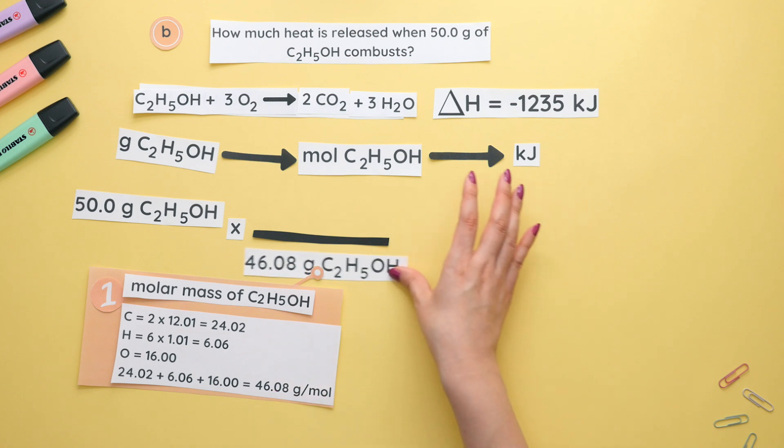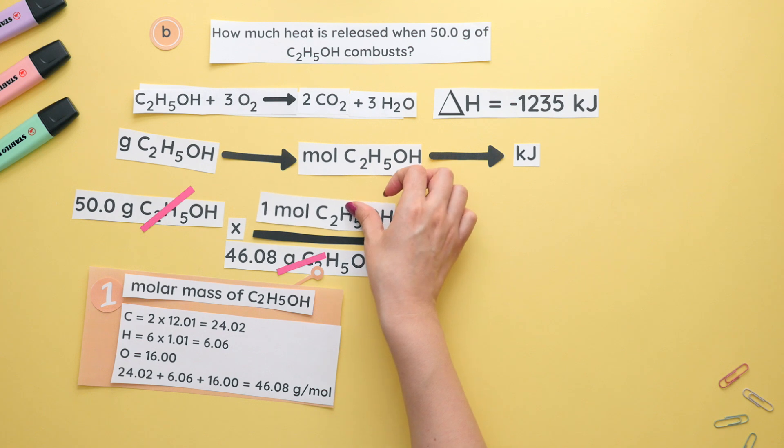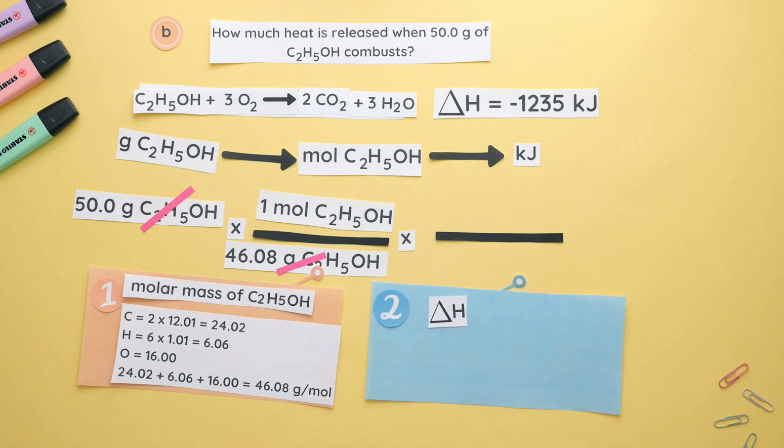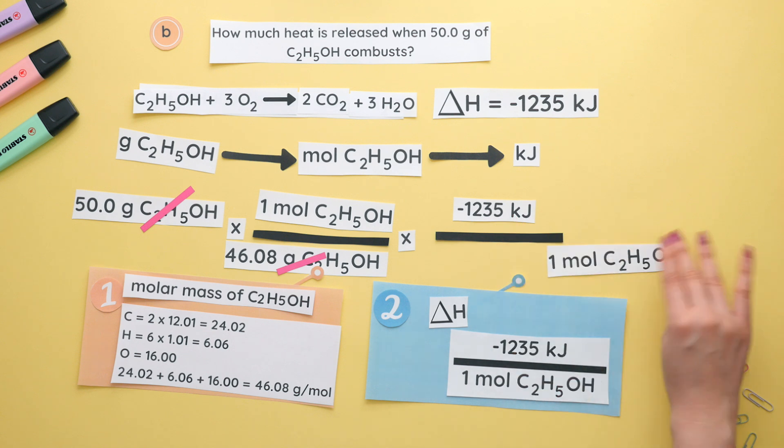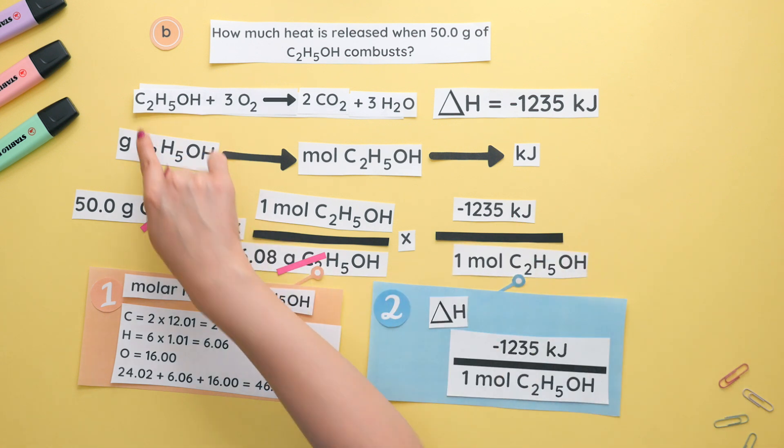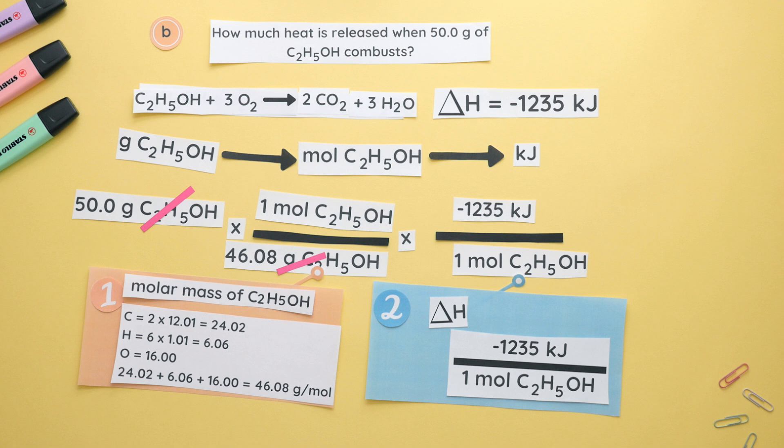We'll place the grams of ethanol we just found at the bottom since we want grams and grams to cancel and one mole of ethanol is left on top. Now that we are at moles of ethanol, we can use the enthalpy change as our conversion factor where negative 1,235 kilojoules is on top and it's divided by the moles found in the balanced equation for ethanol. Align the units so they can cancel and we get negative 1,340 kilojoules.